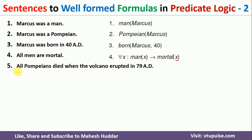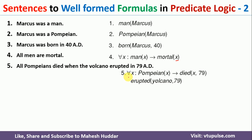The next fact is: All Pompeians died when the volcano erupted in 79 AD. This means: for all X, if X is a Pompeian, then X died in 79 AD. At the same time, the volcano erupted, so we also write Erupted(Volcano, 79). The full representation is: for all X, if Pompeian(X) then Died(X, 79), and Erupted(Volcano, 79).